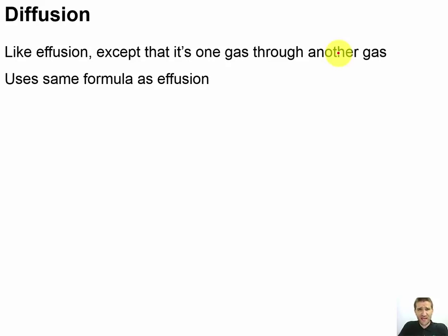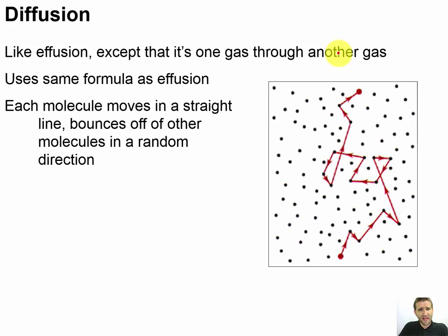It's going to use the same formula as effusion for our proportional rate. To get a more specific rate where we're talking about how much time it takes to move a certain distance, we'd need more information. There's a whole nest of other equations for calculating diffusion and effusion in those cases. But for our purposes at the common level, they use the same formula.